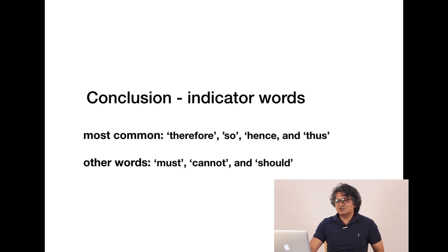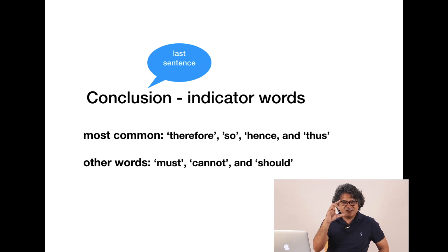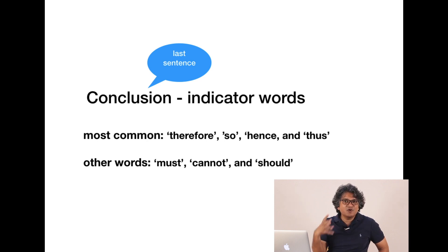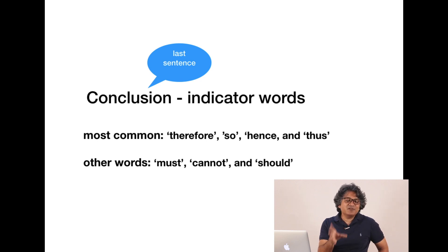There is one more clue for the conclusion in critical reasoning: in ninety percent of cases, the conclusion will be the last sentence of the argument. Remember, the argument is the entire thing — premises plus conclusion — before the question part. Usually in critical reasoning, the conclusion will be the last sentence. Sometimes it will be the first sentence, but words like 'must,' 'should not,' 'cannot' will tell you whether a sentence is a conclusion. Very rarely is the conclusion somewhere in the middle.